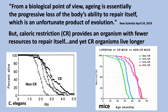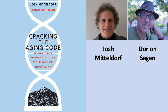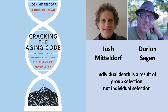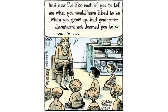If you're interested in this idea, read Cracking the Aging Code, a relatively new book by Josh Mitteldorf and Dorion Sagan. The main message is that individual death is a result of group selection — a dirty word for some biologists, not individual selection. The individual doesn't have an advantage by dying, but the group probably does. They also write that aging is a sexually transmitted disease. Here's a kindergarten teacher telling young students about their futures: 'I'd like each of you to tell me what you would have liked to be when you grew up, had your predecessors not doomed you to be somatic cells.'